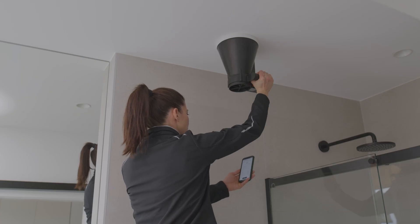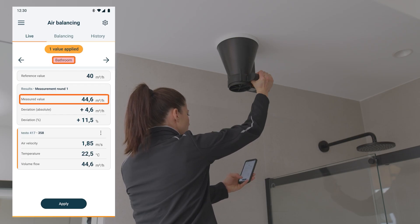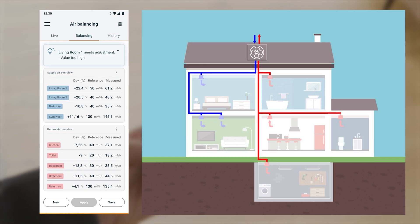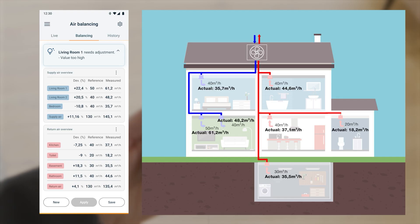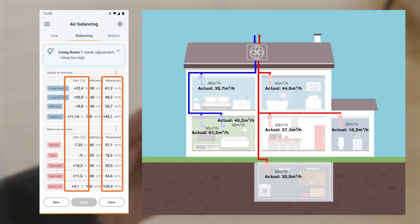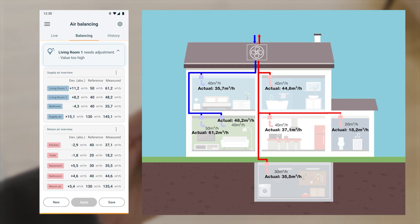The measurement is continued for all other outlets. Once all outlets have been measured, the first round of measurements is complete. The app clearly displays all recorded measured values with percentage and absolute deviation. A particular advantage of the application is the specific recommendation for action, which indicates which outlet is to be adjusted in each measuring round.